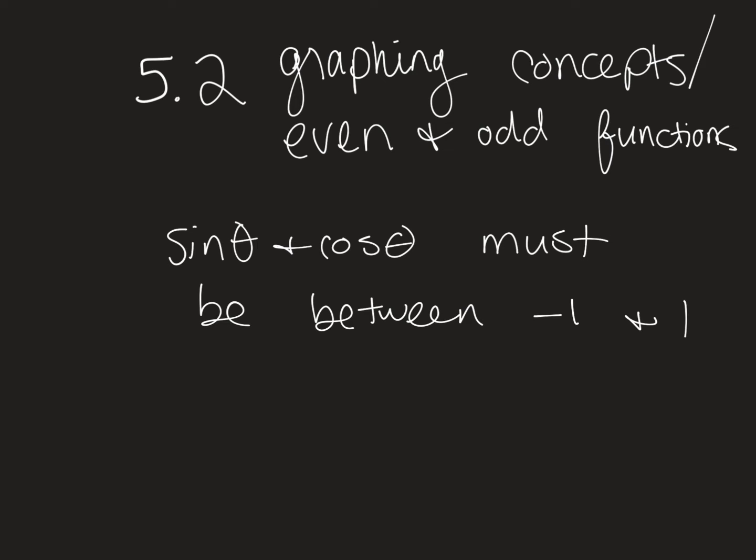Alright, so sine and cosine has to be between negative 1 and 1, so if it's like 5 point something, that's not possible, right? But if it's like 0.2 something, or negative 0.2 something, that works. So basically there's a section on your homework that is going to ask you if it's possible or not, and you just say yes or no.